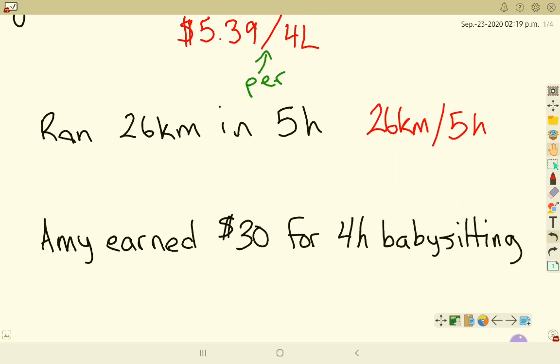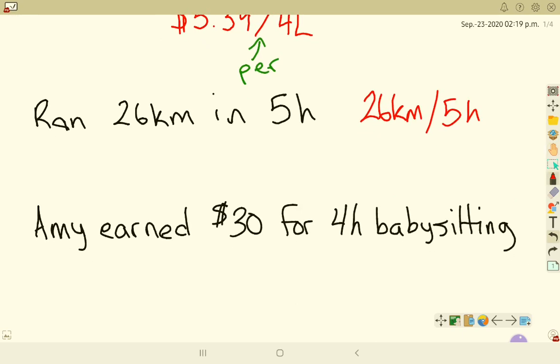We could look at something like Amy earned $30 for 4 hours of babysitting. So that would be $30 per 4 hours. And that's how we say a rate out loud.